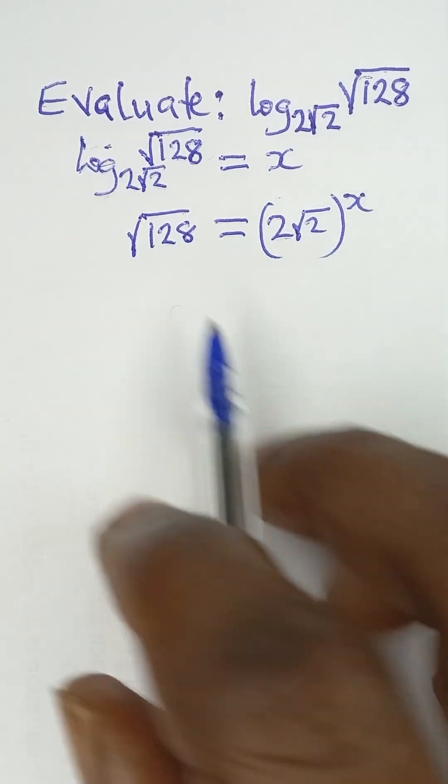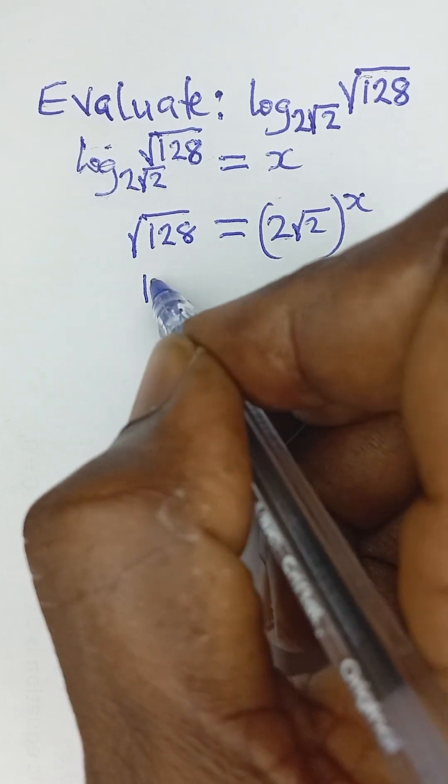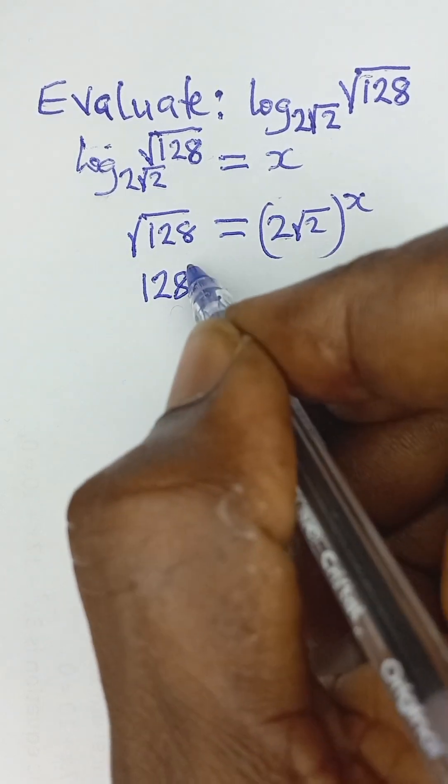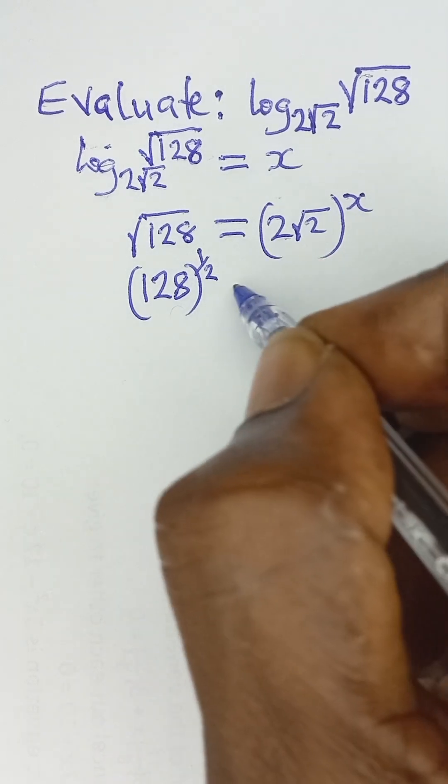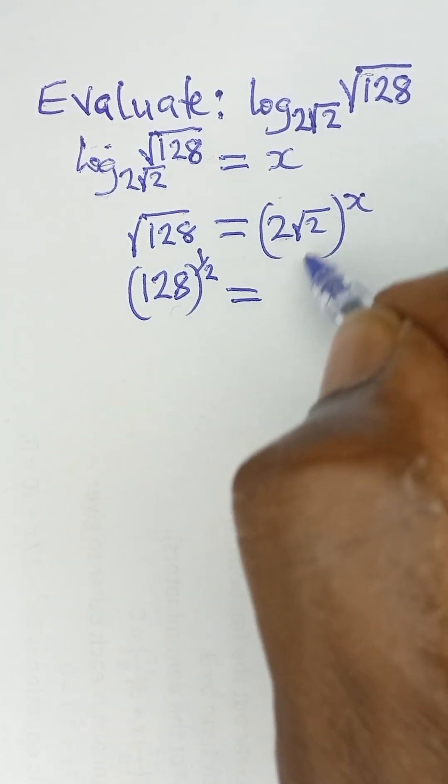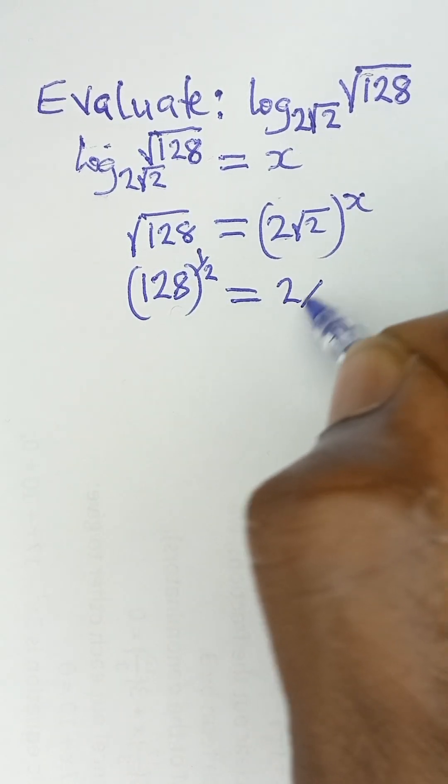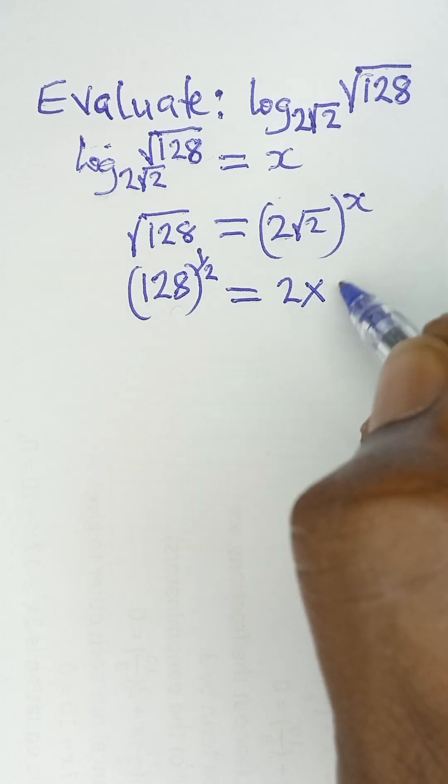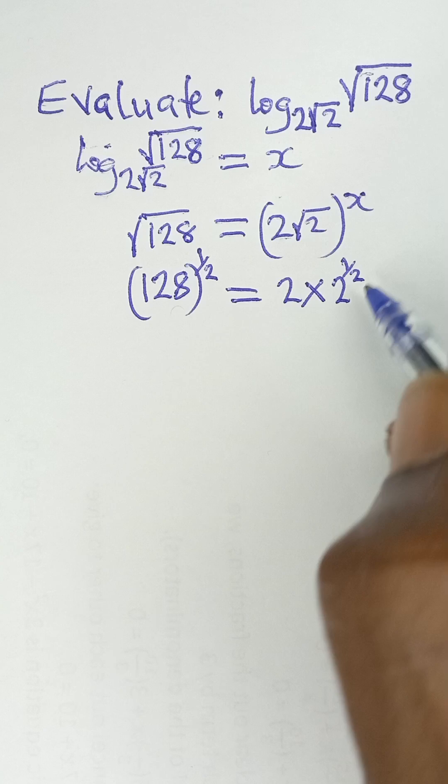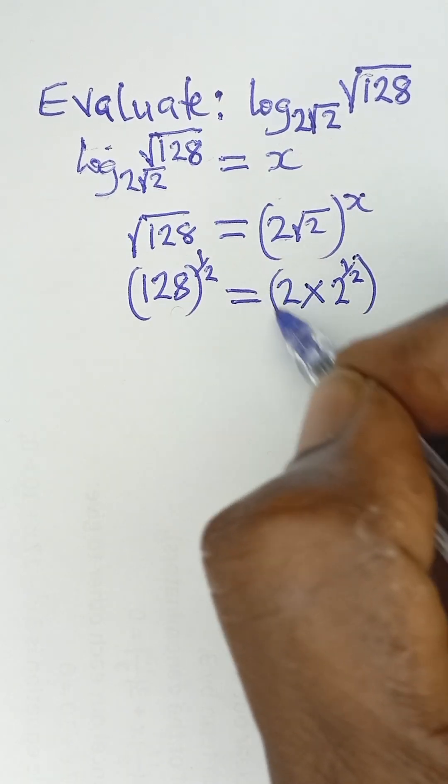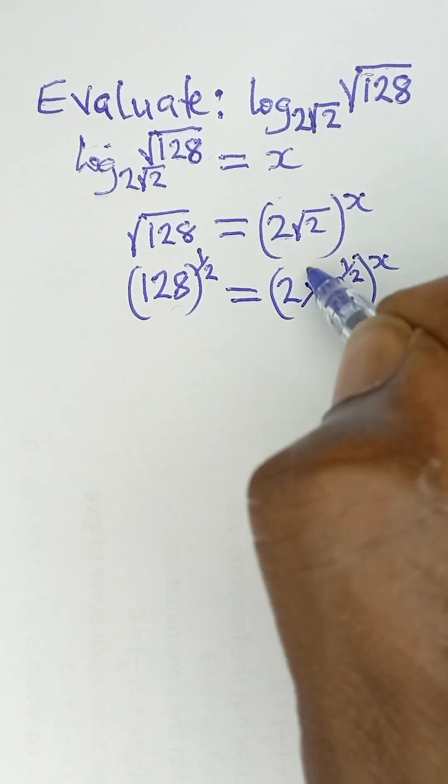The square root of 128 is 128 raised to power half, and that equals 2 multiplied by the square root of 2, which is 2 raised to power half. The square root of any number is that number raised to power half, and then everything is raised to power x.